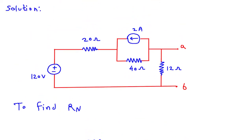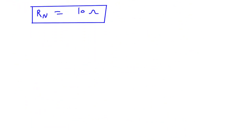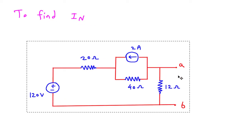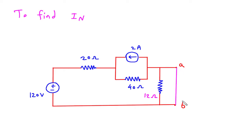Next we have to find IN. To find IN, we will short circuit the terminal AB. So this will be 12 Ohm. We will write it on left side. Now we will short circuit this terminal AB and this will be current IN.